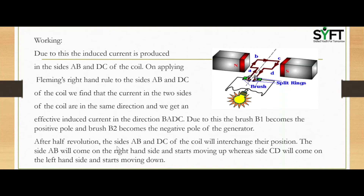After half a revolution, sides AB and DC of the coil interchange their positions — side AB moves to the right and starts moving up, while side CD moves to the left and starts moving down. When the sides interchange positions, the two commutator rings R1 and R2 automatically change their contacts from one carbon brush to the other, so the current keeps flowing in the same direction. Thus a DC generator supplies current in only one direction.